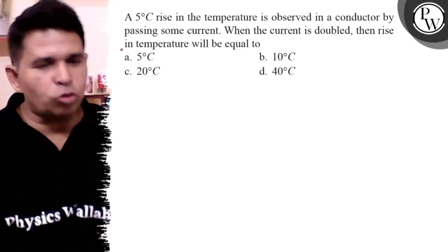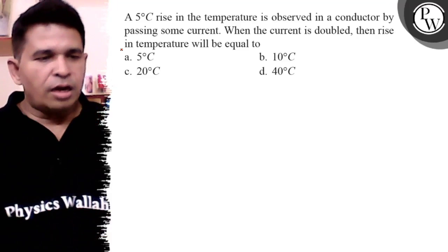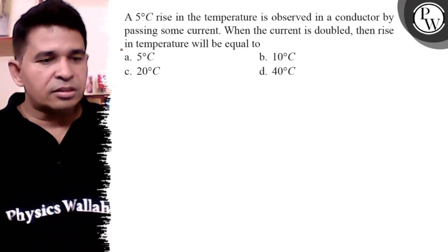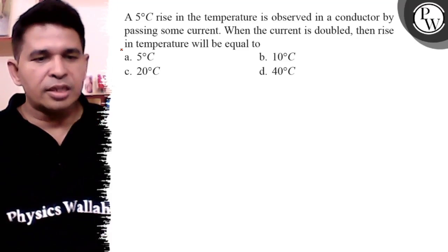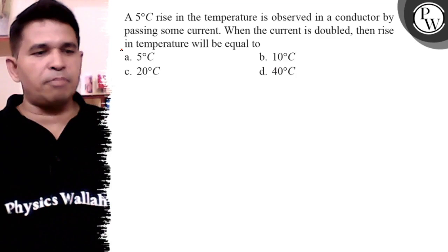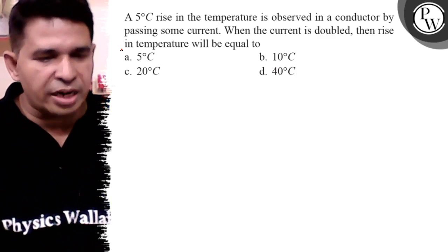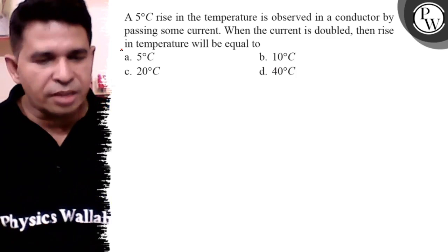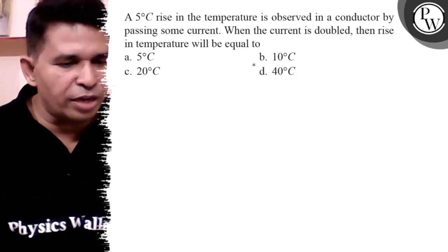Hello Bachchan, let us see this question. A 5 degree Celsius rise in temperature is observed in a conductor by passing some current. When current is doubled, then what is the rise in temperature will be?